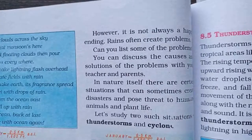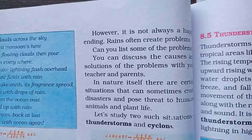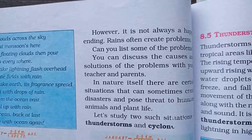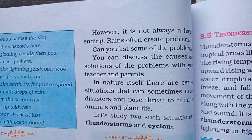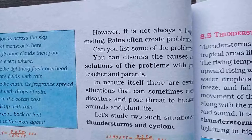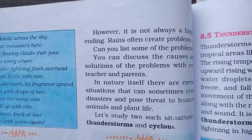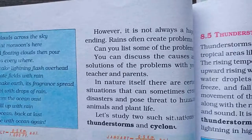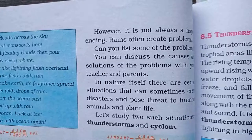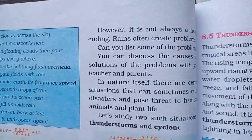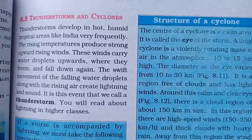There are many situations where rain creates problems, like thunderstorms and cyclones. Friends, you must have discussed cyclones. At the beginning of this chapter we discussed the cyclone that came to Orissa — it was very dangerous and caused harm to many living organisms. It is very harmful. Let's start learning about the next topic: Thunderstorms and Cyclones.